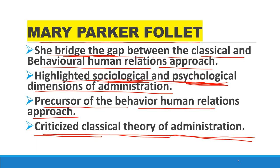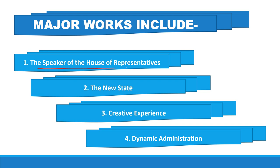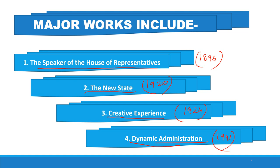Let's discuss her major works. The first major work was The Speaker of the House of Representatives, written in 1896. The second was The New State, written in 1920. The third was Creative Experience, written in 1924. And the fourth was Dynamic Administration, written in 1941. A direct question can also come up in the exam related to her books, because NTA asks comparatively more questions about books and theorists. So these books are important to keep in mind.